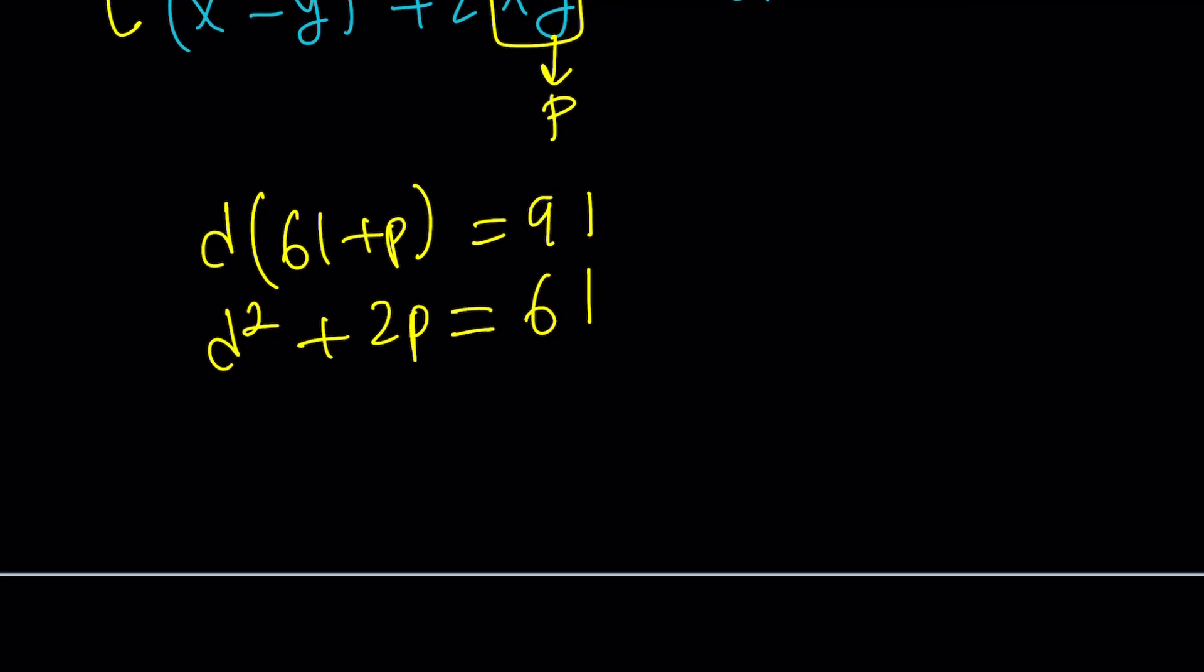What am I going to do with this? Well, I could probably do the following. Distribute the first one. That's going to give me 61d plus dp. It equals 91. And now, what can I do with the second equation? From the second equation, I can actually isolate p. I don't want to isolate d because I don't want to deal with square roots. That would be a little ugly.